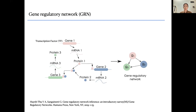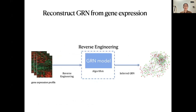A gene regulatory network is a type of network where nodes refer to genes and edges refer to regulatory interactions. Gene regulatory networks are important because they can help us understand the mechanism of disease or other biological processes. However, it is hard to know all gene regulatory networks for all cell types only by wet lab experiments.